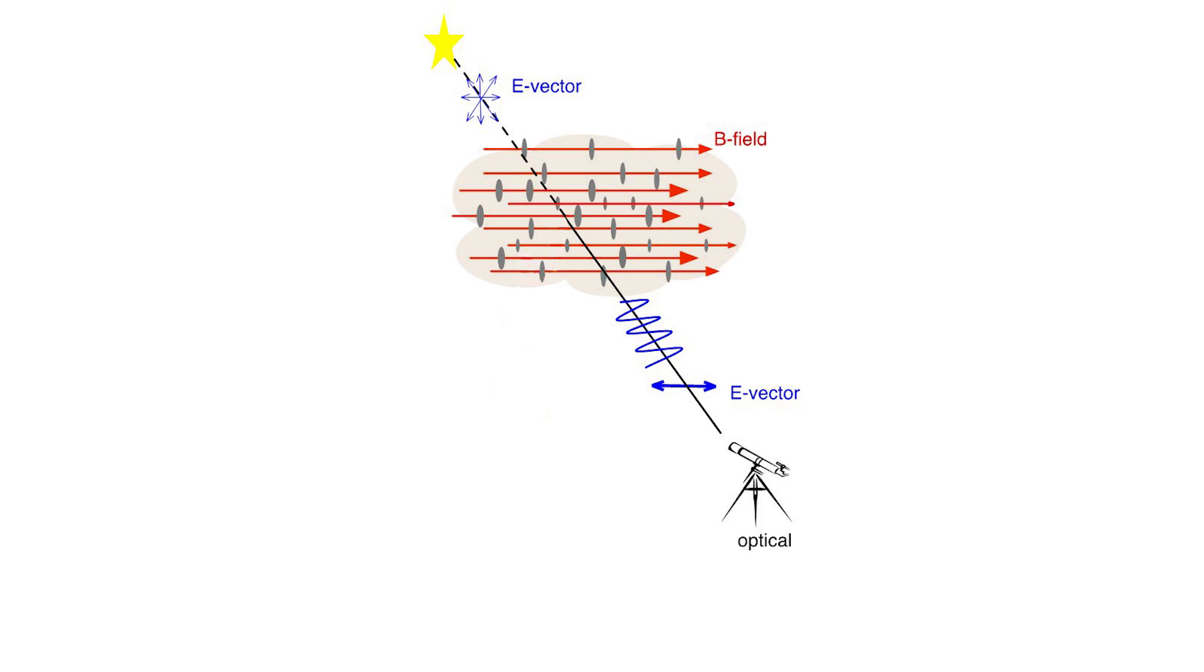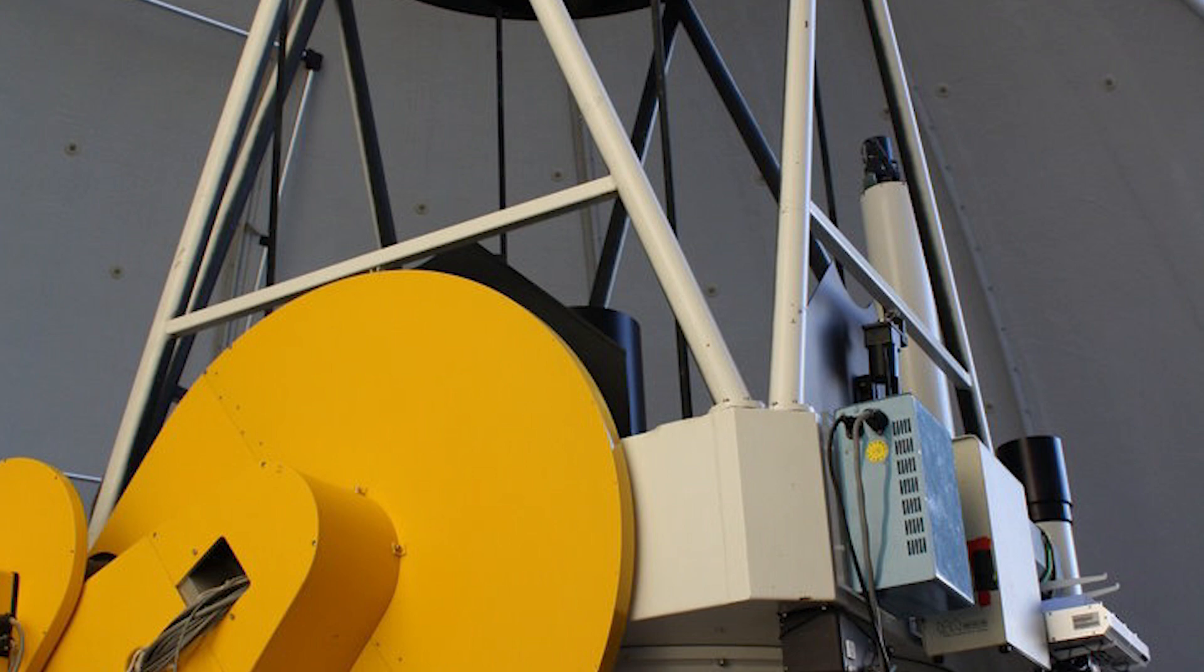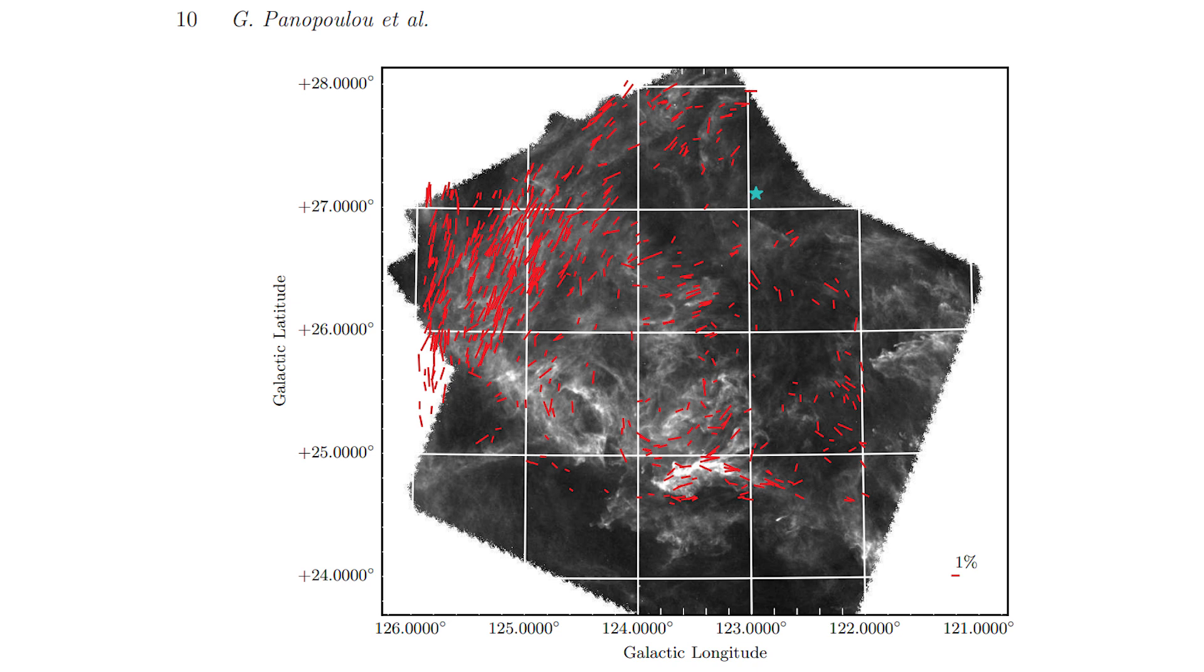This linear polarization of starlight, as observed in the optical part of the electromagnetic spectrum, traces the direction of the magnetic field. Since dust grains are cold, they can also emit in the infrared. Their emitted light is also polarized, but this time in the direction perpendicular to the magnetic field. At the Skinakas Observatory, we used the 1.3-meter telescope and the Robopole instrument to map the magnetic field in interstellar clouds. The red segments indicate the polarization direction of light of a few hundred stars behind the cloud, tracing the direction of the magnetic field. As is usually the case, the morphology of the cloud is correlated with the direction of the magnetic field that permeates it.